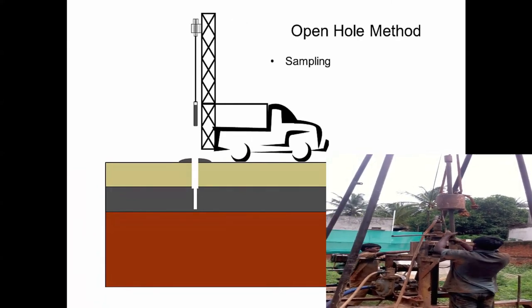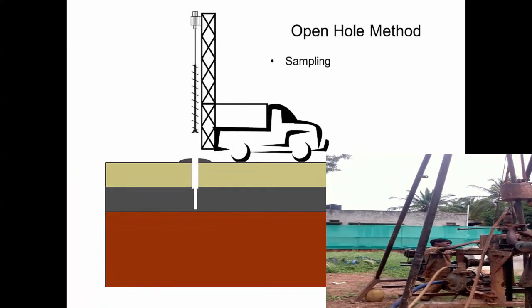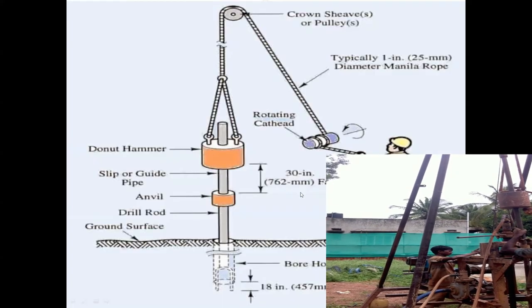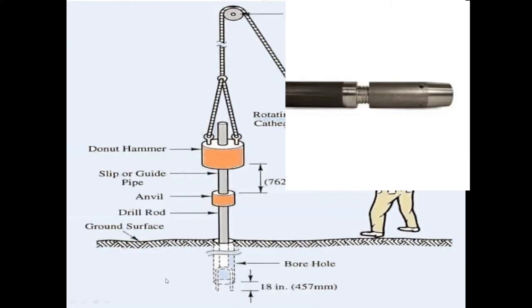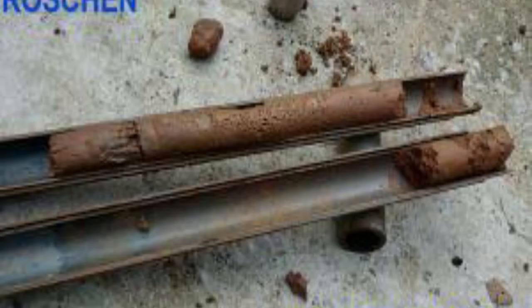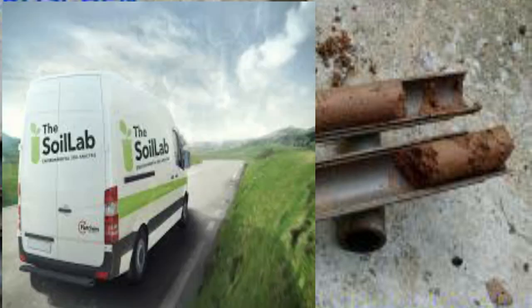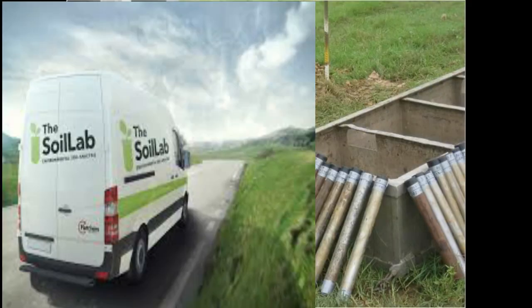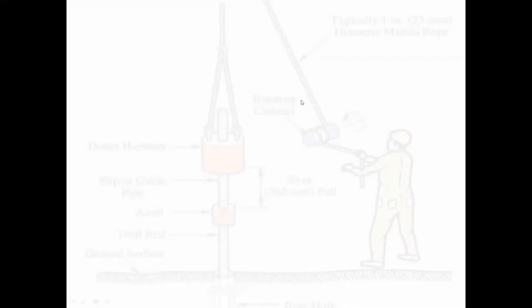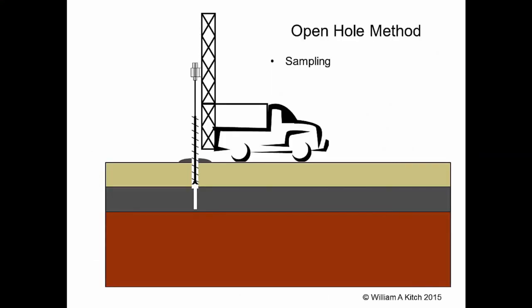The split barrel is disconnected from the cutting shoe and the coupling. The soil collected inside the split barrel is carefully collected so as to preserve the natural moisture content by sealing it in polythene bags or wax is applied on the exposed surface, and transported to the laboratory for testing.